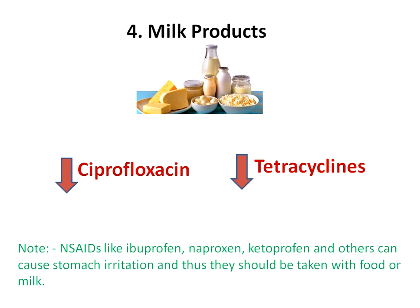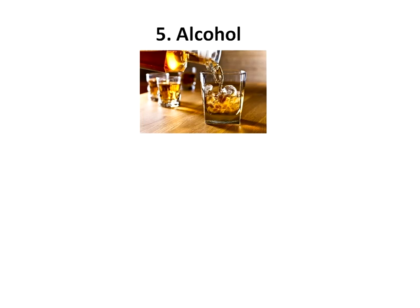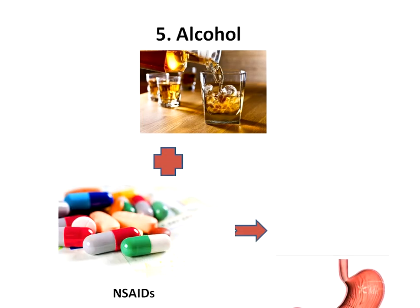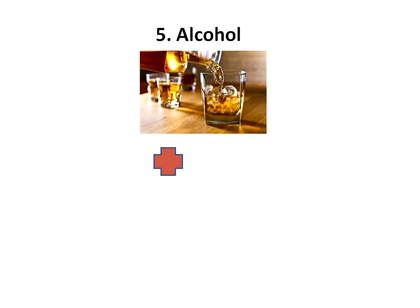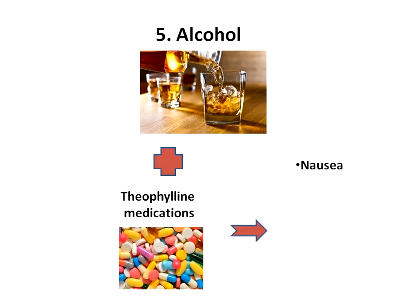Fifth, alcohol. NSAIDs or aspirin can cause stomach bleeding and ulcers, which can be serious. The risk of bleeding is increased if you also drink alcoholic beverages while taking these medications. Call your doctor at once if you have symptoms of bleeding in your stomach or intestines. Also avoid alcohol if taking theophylline medications, because it can increase the risk of side effects such as nausea, vomiting, headache, and irritability. Theophylline is a bronchodilator used to treat symptoms of asthma, bronchitis, emphysema, and other breathing problems.